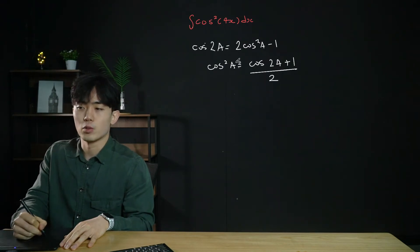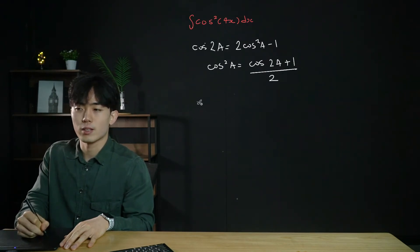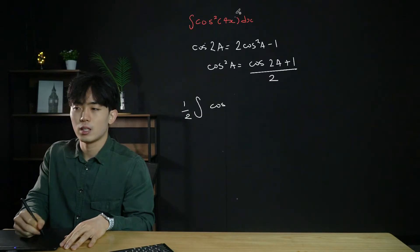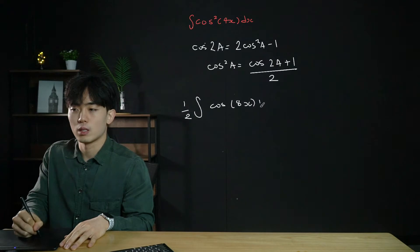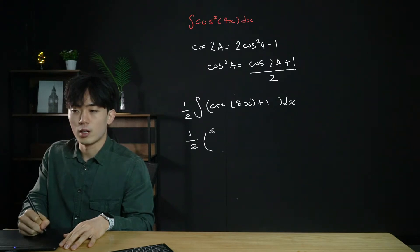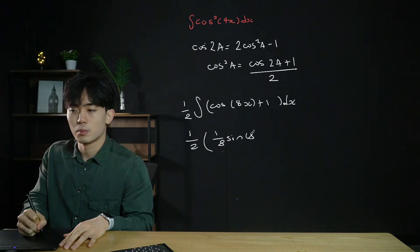In this case a equals 4x, so we substitute: pulling the 1/2 outside, we integrate (cos 8x plus 1) dx. Integrating gives (1/2) times (1/8 · sin 8x + x) plus c. Be very careful about what a is in the question.